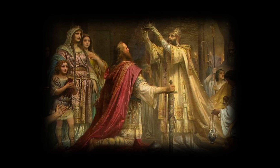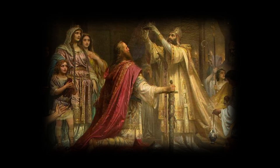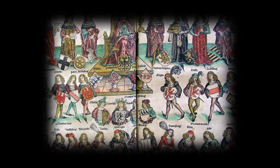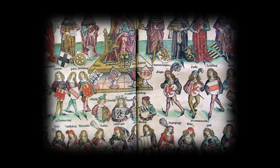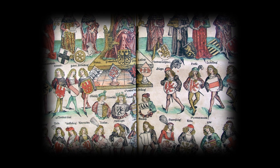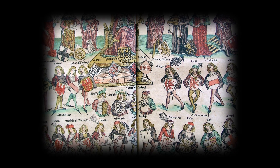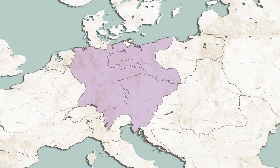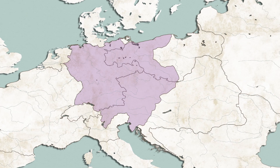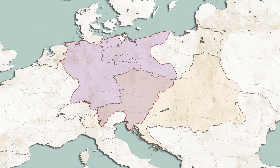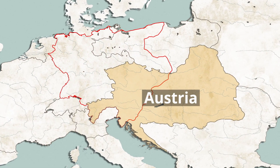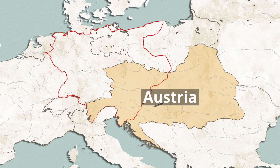Within the empire, the territories enjoyed varying levels of autonomy, and governance structures ranged from independent kingdoms and duchies to autonomous free cities. The Habsburg dynasty, known for ruling over Austria and other lands, often held the imperial title since around the mid-15th century.